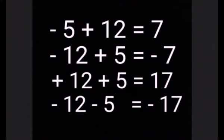Next example: minus 12 plus 5 equals minus 7, because both signs are different. We subtract the digits: 12 minus 5 equals 7. The greater digit is 12, and 12 is minus, so in the answer we write minus 7.